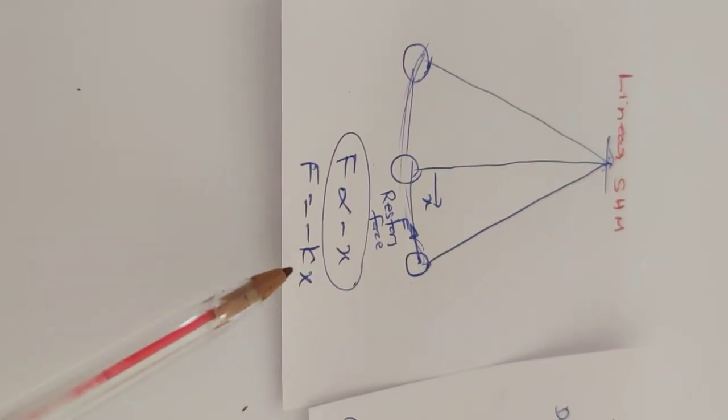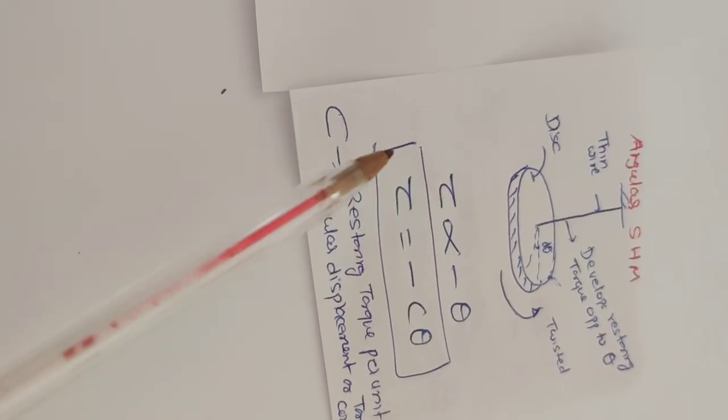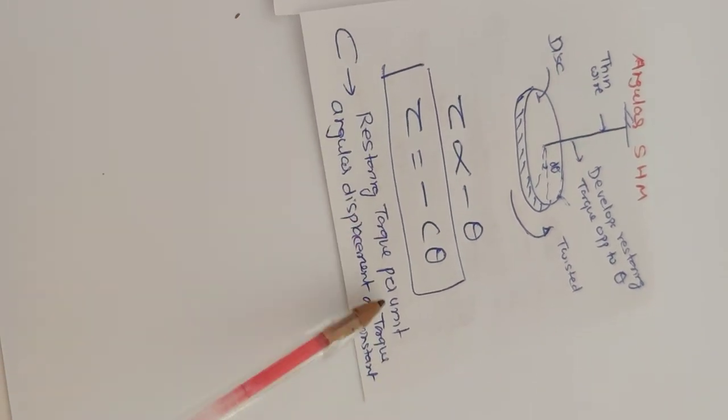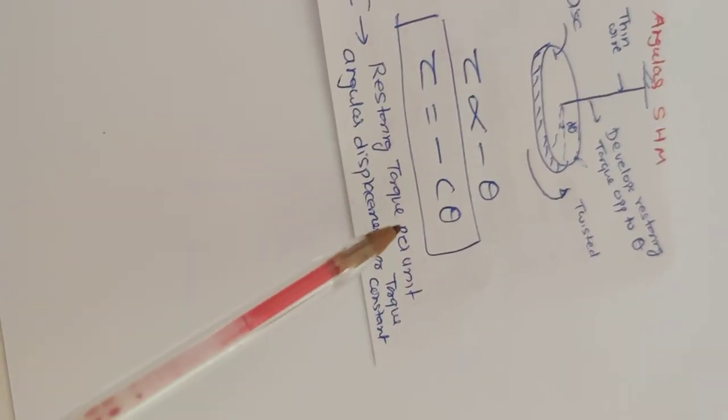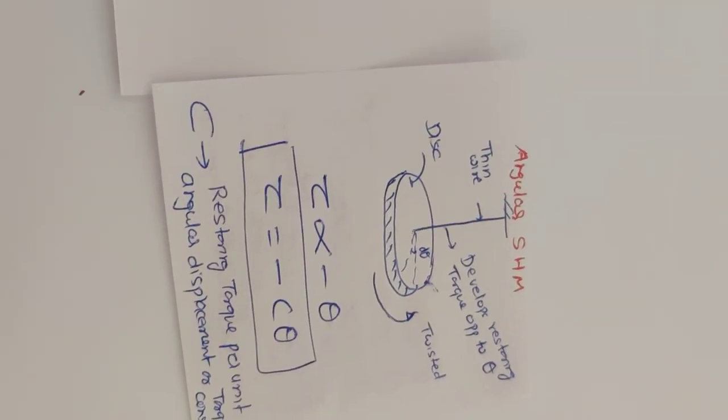What was there in linear SHM? F equal to minus Kx, K was force constant. What do we call C here? That is simple angular SHM.